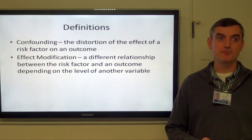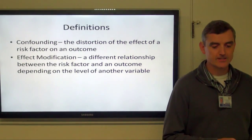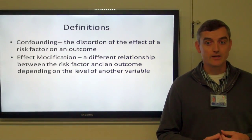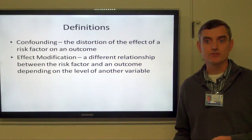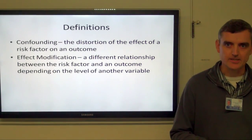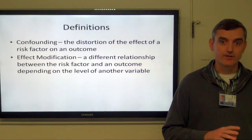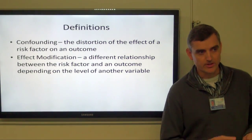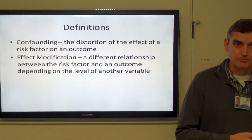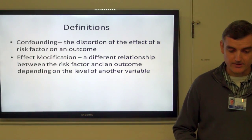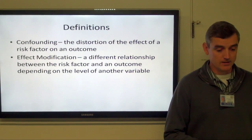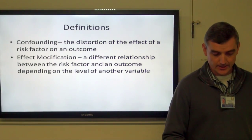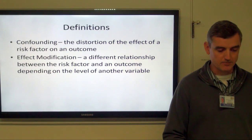Confounding is the distortion of an effect of a risk factor on an outcome. The example of confounding is a study that found an association between coffee consumption and a certain type of cancer, which was a surprising finding until they realized they had not considered whether the people smoked. It turned out people who drink a lot of coffee are more likely to smoke, and that was contributing to the effect. Effect modification is when the relationship changes depending on the level of a third variable — a subtle but important difference.